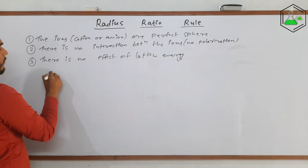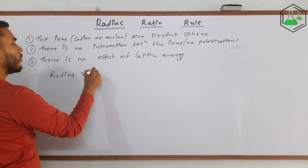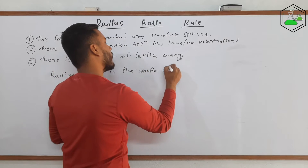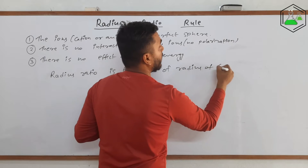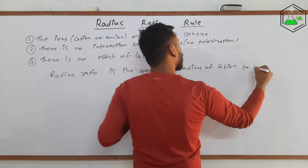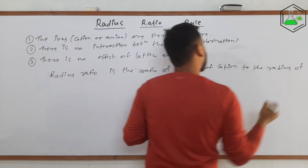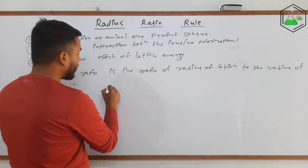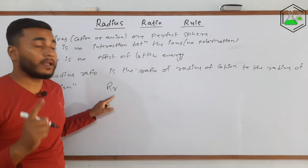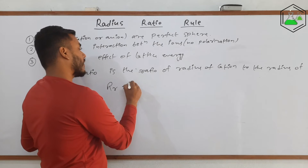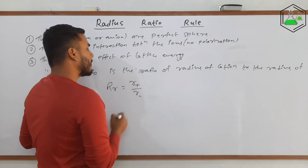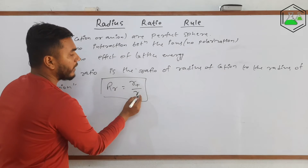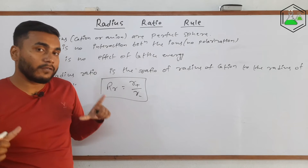Now, the radius ratio rule says that the radius ratio is the ratio of the radius of the cation to the radius of the anion. It is defined as r⁺/R⁻, where small r is for the cation and capital R is for the anion. So it is simply the ratio of the radius of the cation to the radius of the anion.